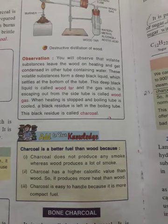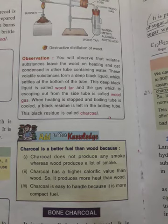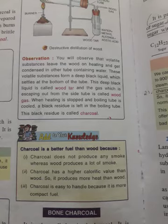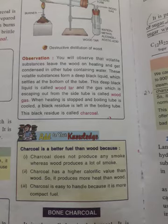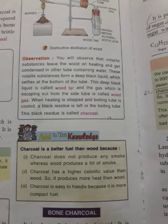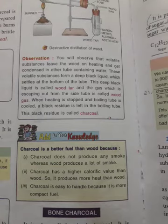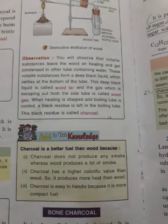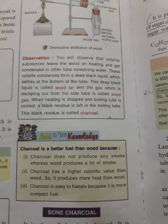Hello everyone, today we will study about charcoal, an amorphous form of carbon. Charcoal is of various forms like wood charcoal, bone charcoal, sugar charcoal, coke, etc. Let's start with wood charcoal. Wood charcoal is obtained by the destructive distillation of wood.